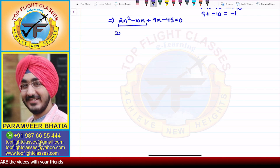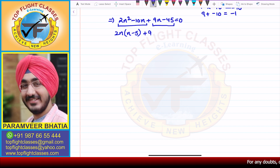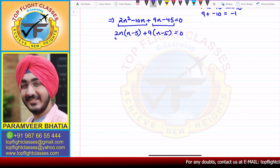In the first two terms, 2N is common, giving 2N(N minus 5). In the last two terms, 9 is common, giving 9(N minus 5), and this equals 0.